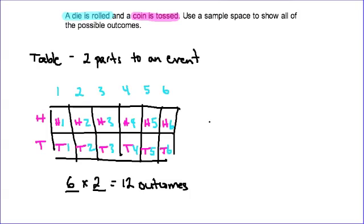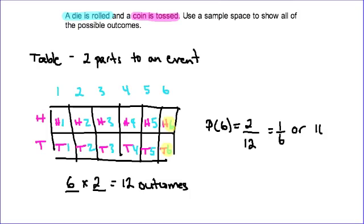If I want to know the probability of having a 6 as part of my outcome, I can quickly count and see there is a 6 in two of the outcomes. So I have 2 favorable outcomes out of 12 total outcomes, which is the same as 1 over 6, or 16.6 repeating percent.